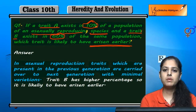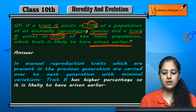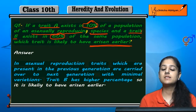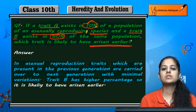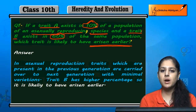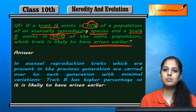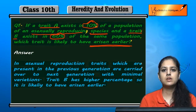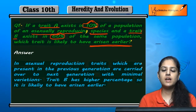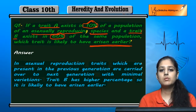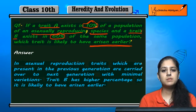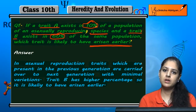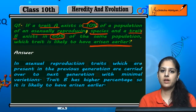So looking at this case, trait B is likely to have arisen earlier. Trait A is only 10%, which is lesser, meaning variation has increased over time. But trait B is 60%, which means it has been consistently passed down, indicating it arose earlier.